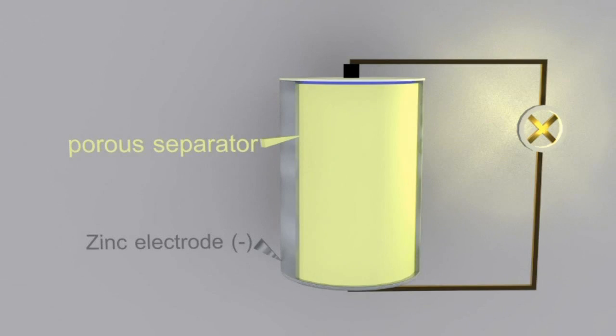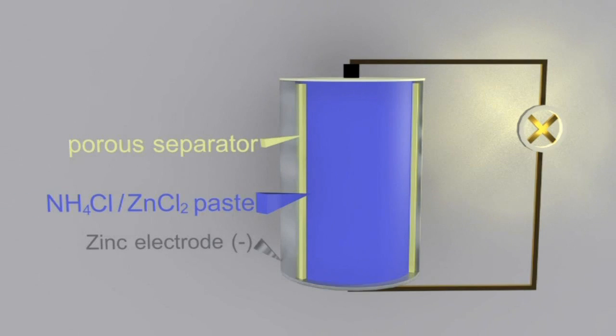The zinc electrode, and under that the porous separator which behaves like the salt bridge. Next in is the ammonium chloride-zinc chloride paste which is the electrolyte, then some manganese(IV) oxide, and stuck into that is a carbon rod—carbon in the form of graphite, a non-metal conductor.